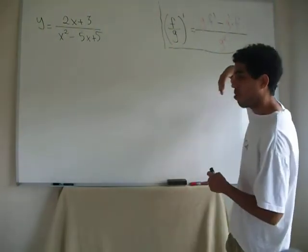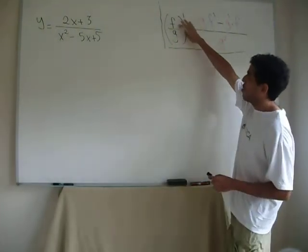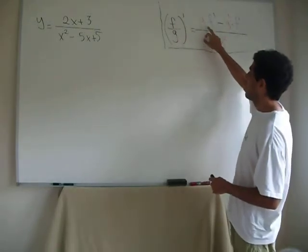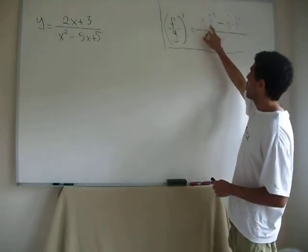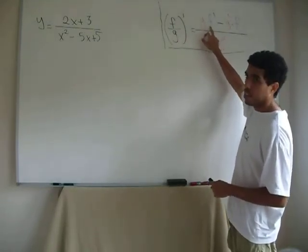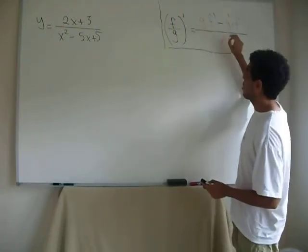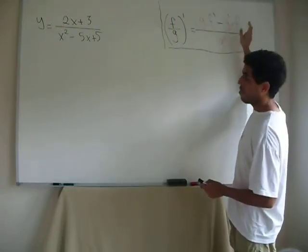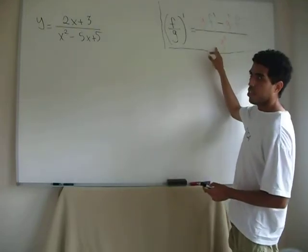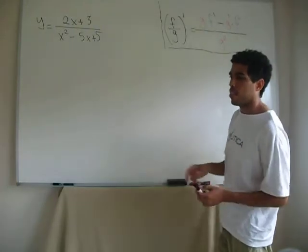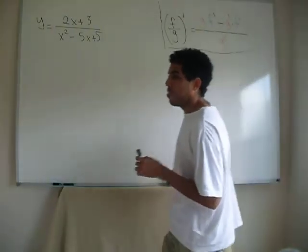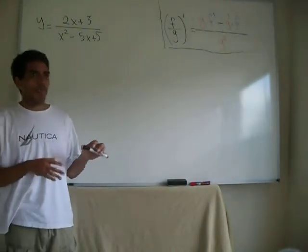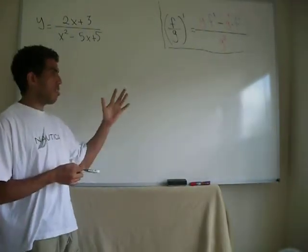I'm going to go over it real quick. F divided by g, derivative equals g without derivative times f derivative, minus derivative of g times f. Division by g squared. It's just as simple as that. You have to be very careful when doing derivatives of divisions, or functions that are divisions.